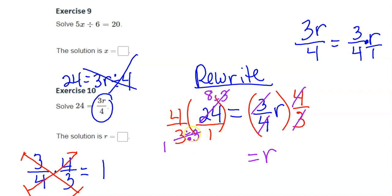Now when I multiply across, my numbers got easier. 4 times 8 is the numerator, and the denominator is 1 times 1. When I do the math, I end up with 32 equals r.